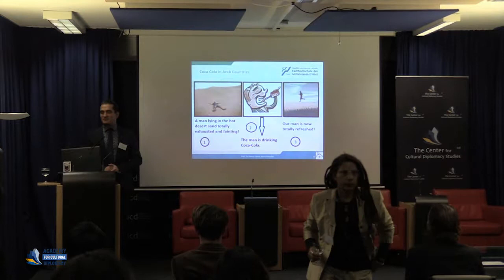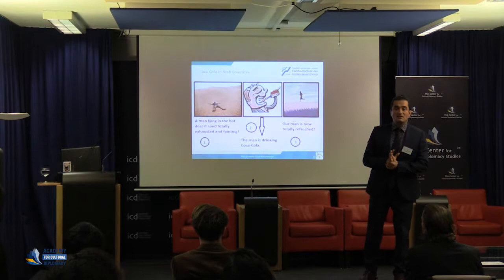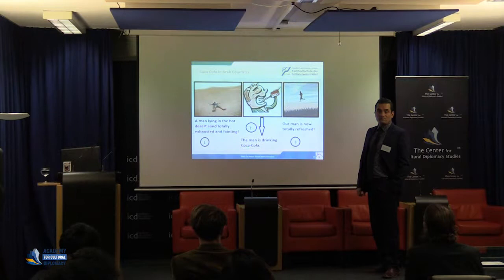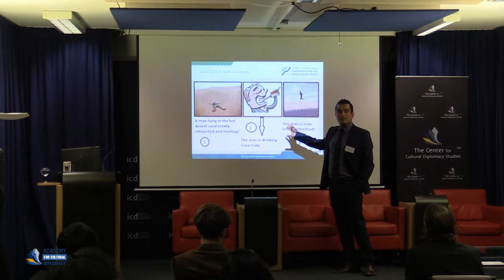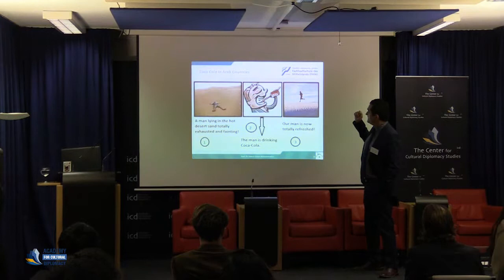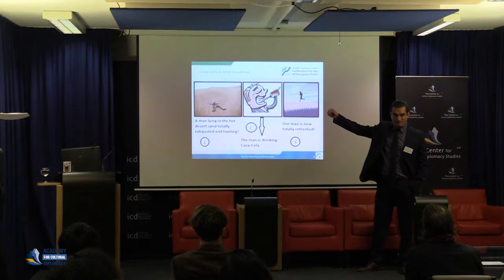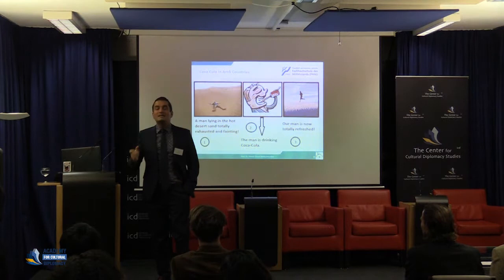Please look at this photo. At the start of my presentation I said language is one very important part of culture. This is an advertisement from Coca-Cola in Arab countries: a man in the desert drinks Coca-Cola and feels refreshed. After they ran this advertisement they lost the market and wondered why — it seemed like a great ad. They found out that in Arab countries, people write and read from right to left. So the audience read the story as: a man is running, then he drinks Coca-Cola, and then he collapses — the opposite of the intended message. Something very simple, very small, but very deep and important.